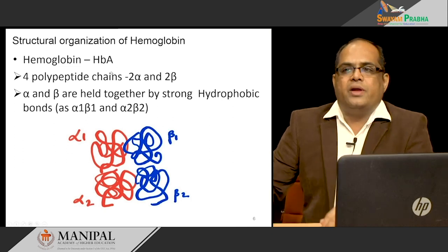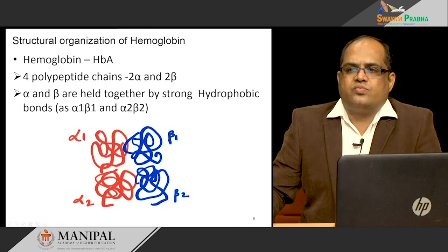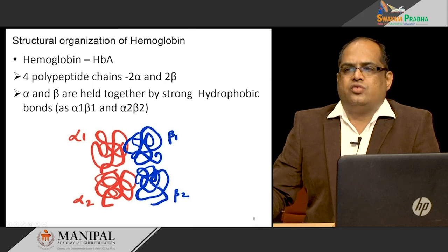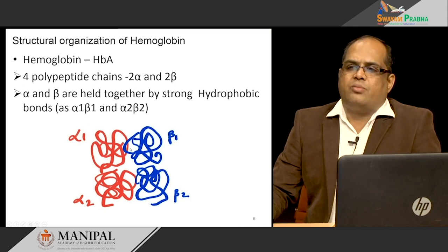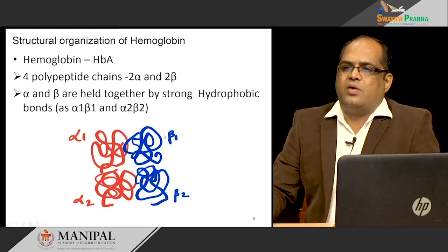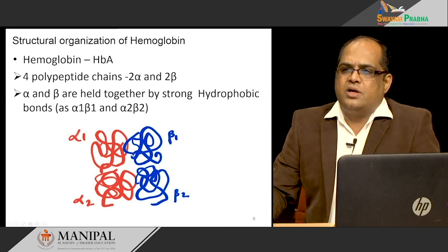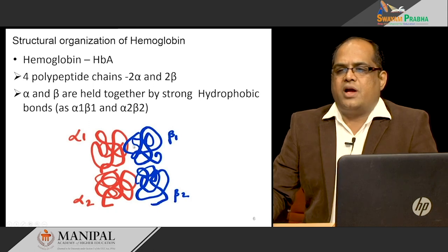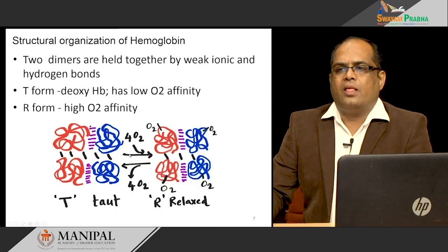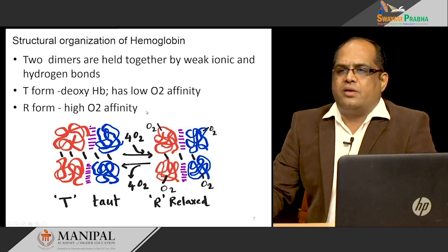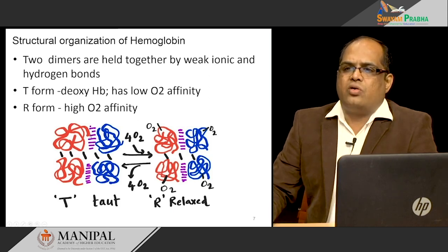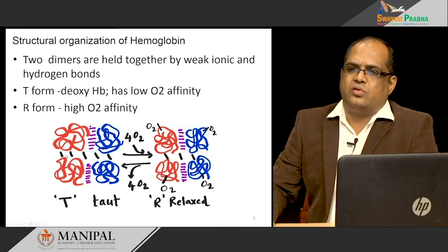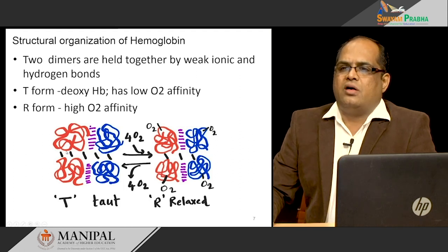Hemoglobin A is made up of four polypeptide chains: alpha-1, alpha-2, beta-1, and beta-2. Two alpha and two beta chains are present, and these alpha and beta chains are held together by strong hydrophobic bonds. Alpha-1 and beta-1 work together as a unit, and alpha-2 and beta-2 as another unit, because of the strong hydrophobic bonds between these alpha and beta chains. The two dimers are held together by weak ionic and hydrogen bonds. So while the alpha-beta interactions are strong hydrophobic bonds, the dimer-dimer interactions are weak ionic or hydrogen bonds.